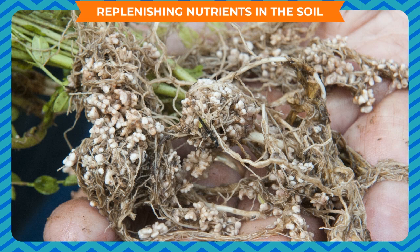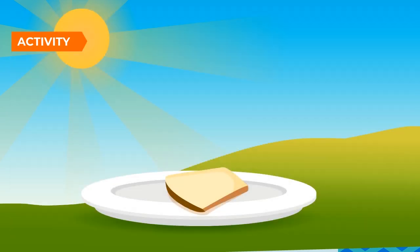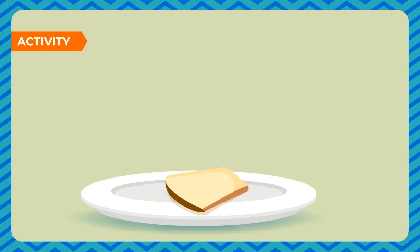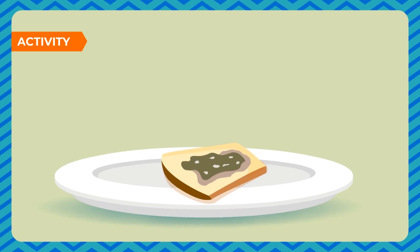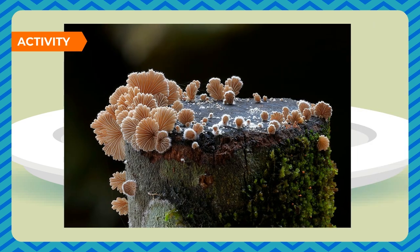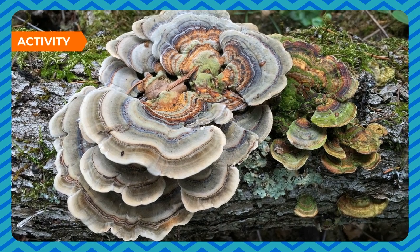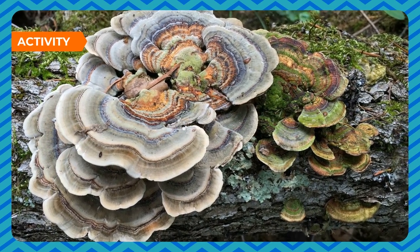Activity: take a piece of bread, sprinkle some water over it, and leave it in a hot place for two to three days. You will observe a greenish-brown or greenish-yellow coating on the bread resembling fluffy patches of cotton-like threads. These fluffy patches are fungi. Fungi cannot make their own food — they feed on dead and decaying matter by secreting digestive juices, which convert dead matter into a solution that the fungi then absorb to obtain nutrients and synthesize their food.